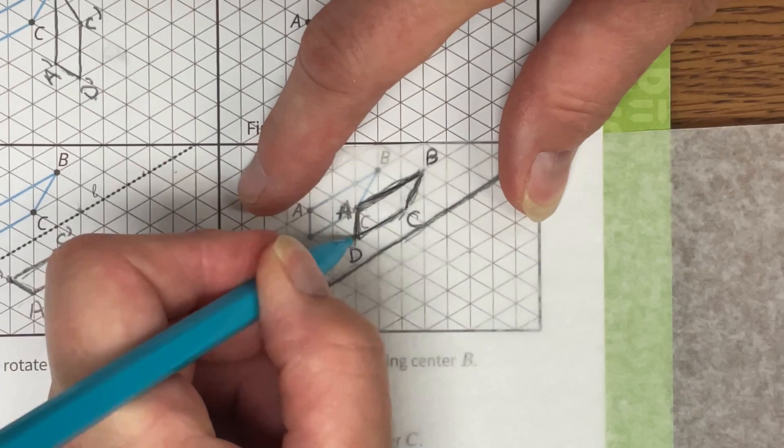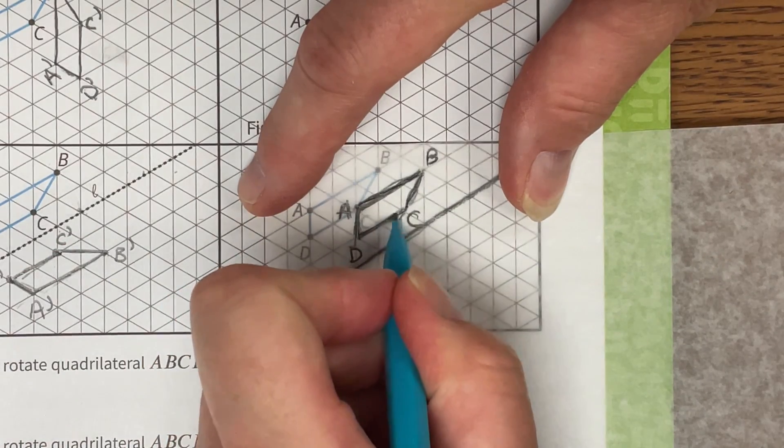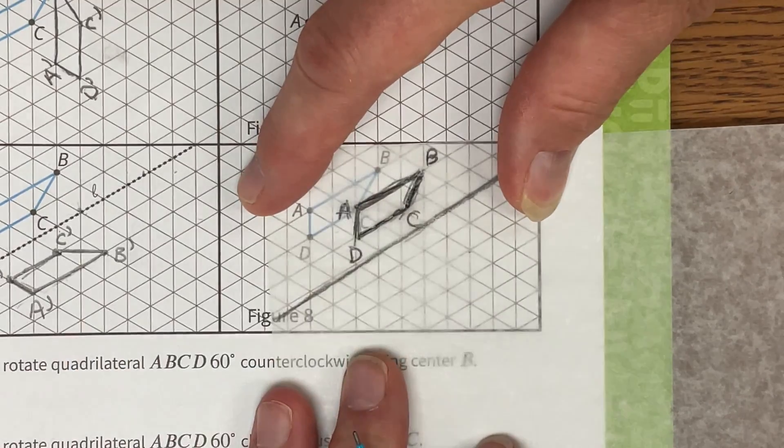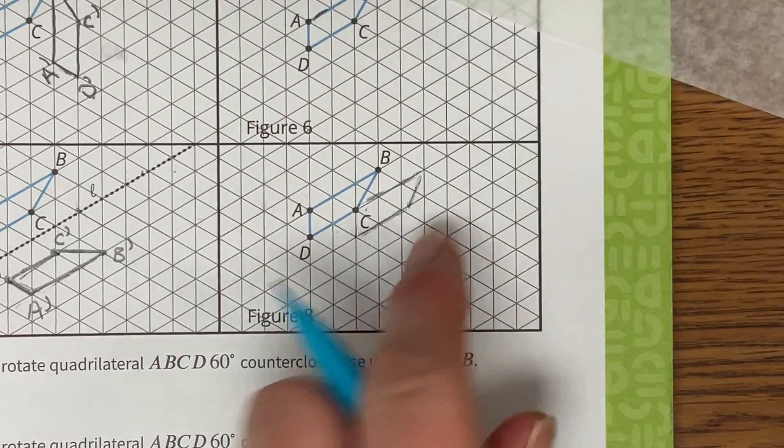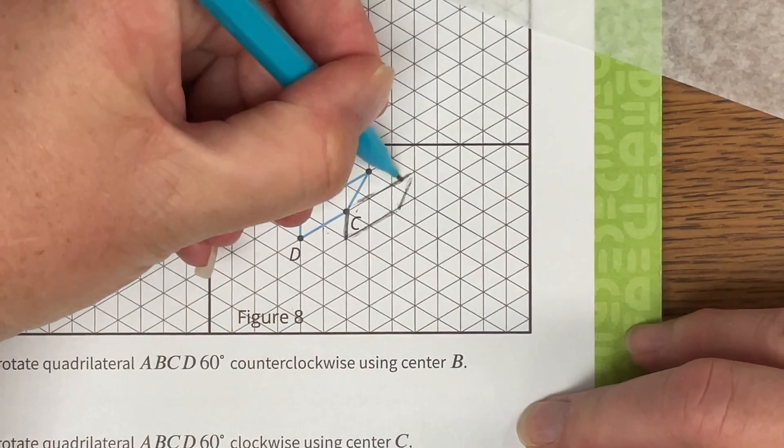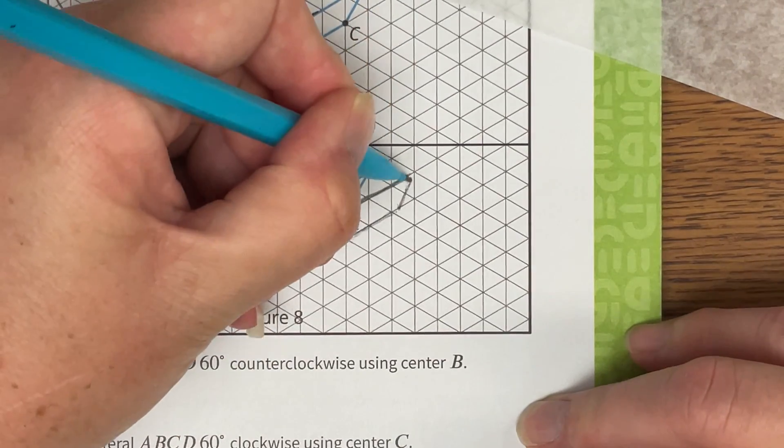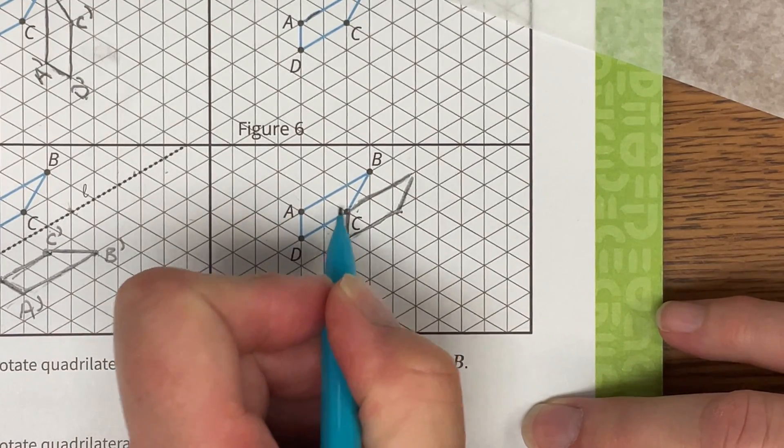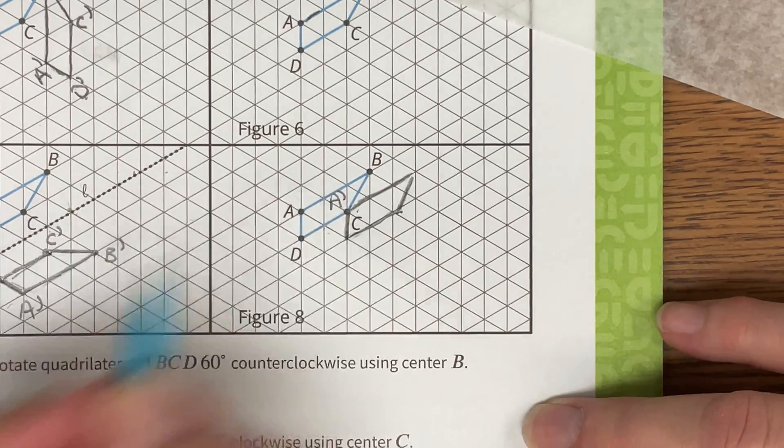So I'm gonna go ahead now and I'm going to trace over the top of this so that I can transfer that image into my book. I've got my outline here and I see now that it has just moved over a little bit.